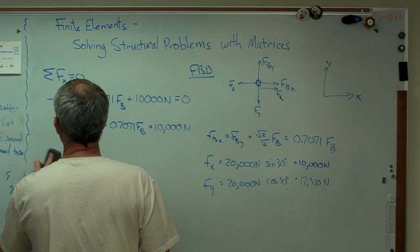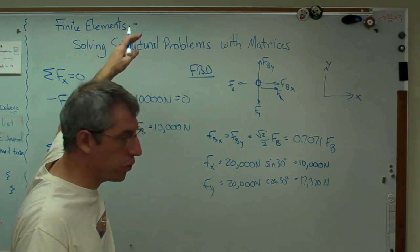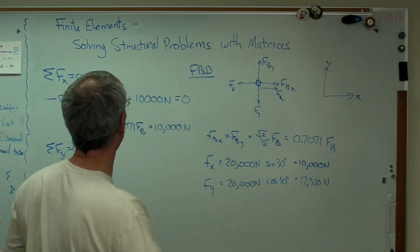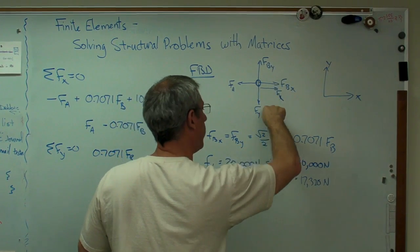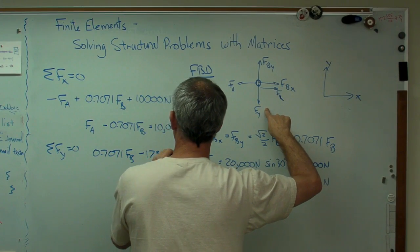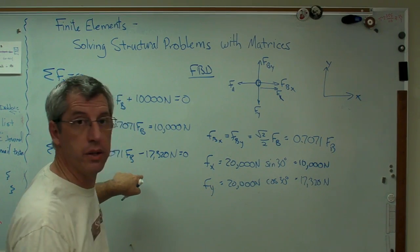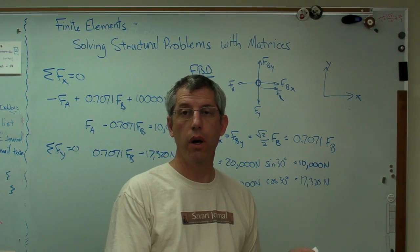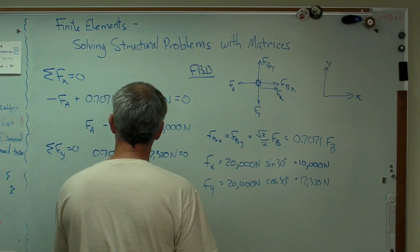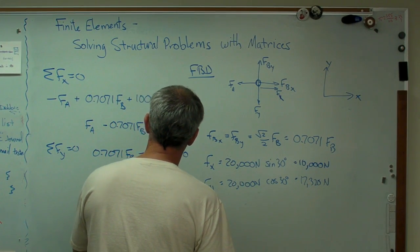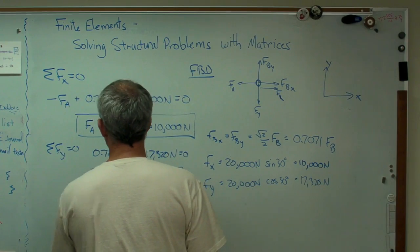Next one, sum of the forces in the y direction has to be zero. That's the other equation of equilibrium. So we're doing this just the way we solve every other statics problem. So let's see, FBY. Well, that's 0.7071 FB minus that, minus 17,320 newtons. That has to equal zero. I'm going to rearrange this in the same way I did this one. I'm going to put all the things I don't know on the left side of the equal sign and all the things I do know on the right-hand side of the equal sign. So that's 17,320 newtons again. So there's one equation right there. There's the other one.